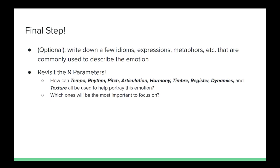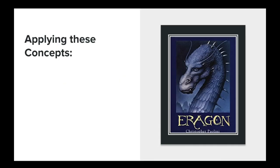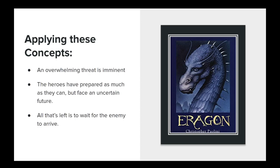In the next few pages, we will look at one last example from the Inheritance Cycle. In this example, we will be analyzing the emotions experienced in the hours before the Battle of Farthen Dûr. The heroes have been warned of a massive army of Urgals approaching the Dwarven city of Tronjheim. They are being led by a powerful shade and greatly outnumber both the Varden and Dwarven forces.